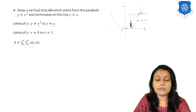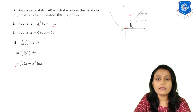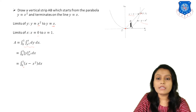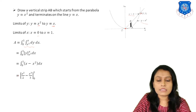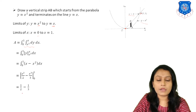We integrate first with respect to Y, keeping X constant. The integral of 1 dy is Y, evaluated from X squared to X, giving the integral from 0 to 1 of (X minus X squared) dx. Integrating: X squared over 2 minus X cubed over 3, evaluated from 0 to 1, gives 1/2 minus 1/3. Simplifying, the area equals 1/6.